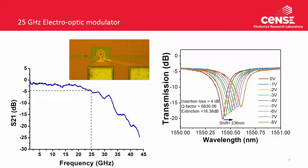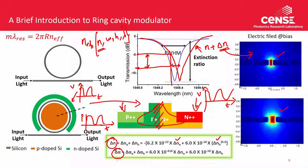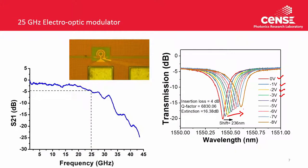Looking at the experimental example: when you change the bias voltage, the resonance moves. We also said that absorption increases — alpha increases — resulting in a reduction in extinction and broadening of the resonance. Nonetheless, what we are interested in is the shift in wavelength. We can do this really fast, going back and forth from 0 V to 1 V.